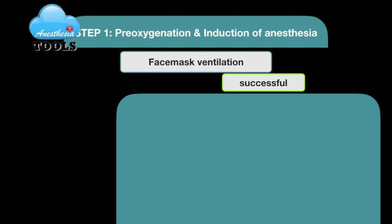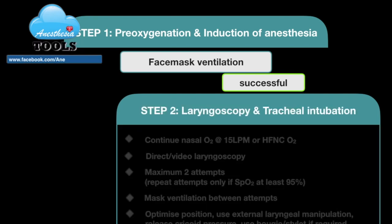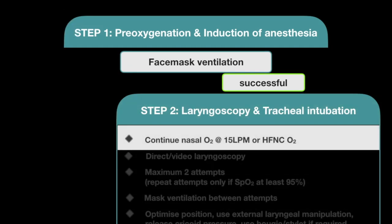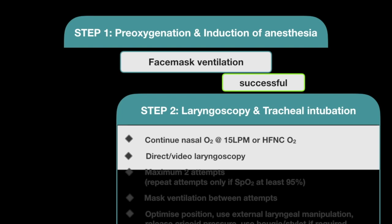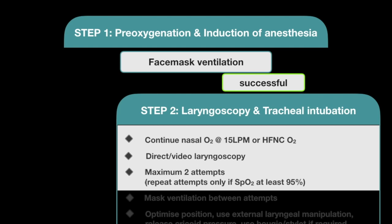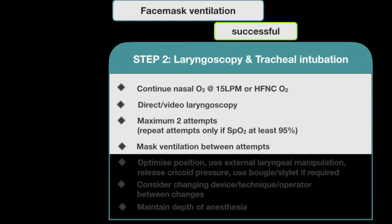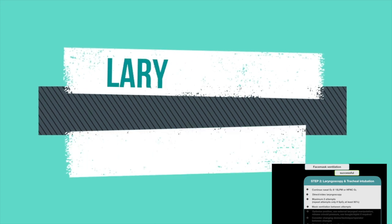Step 2 involves laryngoscopy and tracheal intubation using direct or video laryngoscopy. Nasal oxygen using a flow of 15 liters per minute or high-flow nasal cannula oxygen should be continued. The choice of laryngoscopy depends on availability of resources and expertise. Do not exceed more than two attempts at intubation, and repeat an attempt only if oxygen saturation is above 95%. Mask ventilation should be performed between attempts.